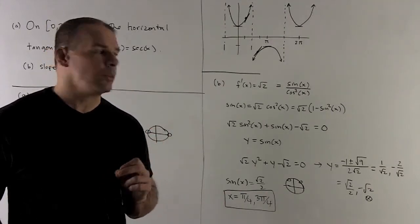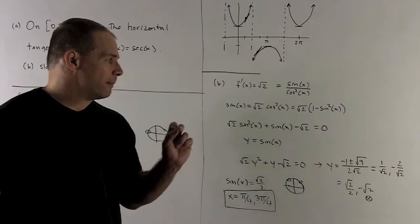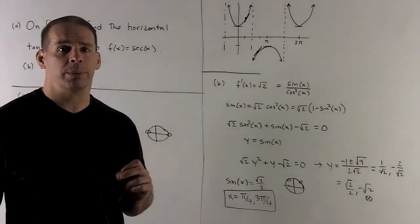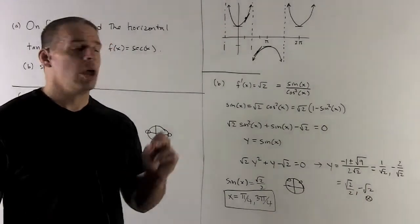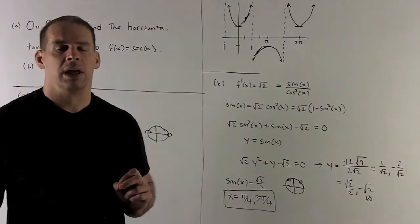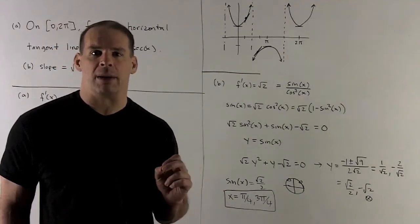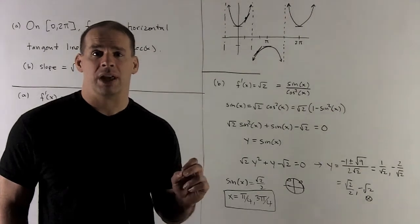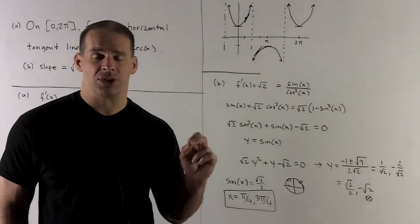When I do that, what comes out? We're going to have y = (-1 ± 3)/(2√2). That'll simplify to 1/√2 and -2/√2. Now if I multiply both of those top and bottom by √2/2, they're going to switch over to √2/2 and -√2.